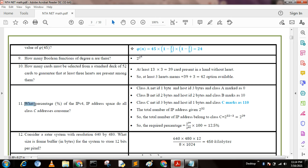Next question: What percentage of the IPv4 address space do all Class C addresses consume? Class A net ID is one byte, so Class A marks as 0. Class B net ID is two bytes, host ID two bytes, so Class B marks as 10. Class C net ID is three bytes, host ID one byte, so Class C marks as 110.